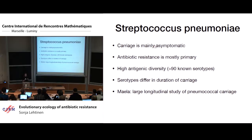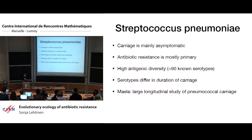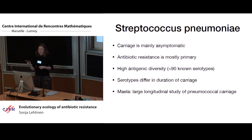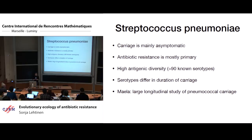The talk is motivated by trends we see in surveillance data in a lot of bacteria, but the ecology of the models is primarily coming from Streptococcus pneumoniae. For the purposes of the talk, the things you need to know about strep pneumoniae are that it is a bacterium that infects primarily children with relatively high rates of carriage, but carriage is mainly asymptomatic. A consequence of that is that the antibiotic exposure strep pneumo experiences is primarily because of infections with other bacteria — something known as bystander selection. Antibiotic resistance is mostly primary, which means that if you have a resistant infection, it's because you've been infected with a resistant strain.